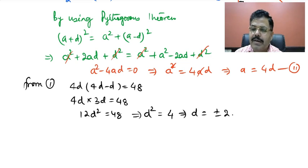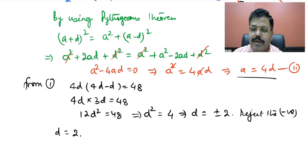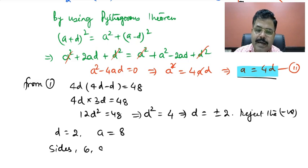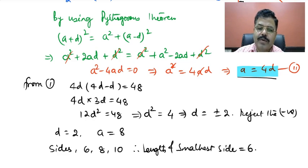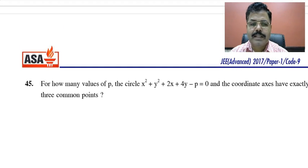With d = 2, we get a = 4d = 8. Therefore the three sides of the triangle are a minus d = 6, a = 8, and a plus d = 10. The length of the smallest side is 6. So the answer to this question is 6.